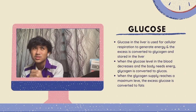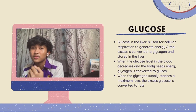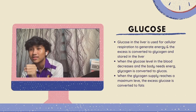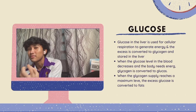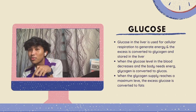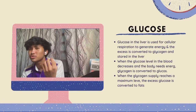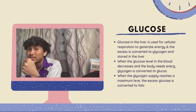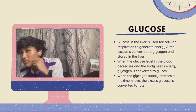For glucose assimilation in the liver: glucose is used for cellular respiration to generate energy. Excess glucose is converted to glycogen, which is stored in the liver. When blood glucose levels decrease, glycogen is converted back to glucose because the body needs energy through cellular respiration. However, if glycogen supply reaches its maximum level, the excess glucose is converted to fats.